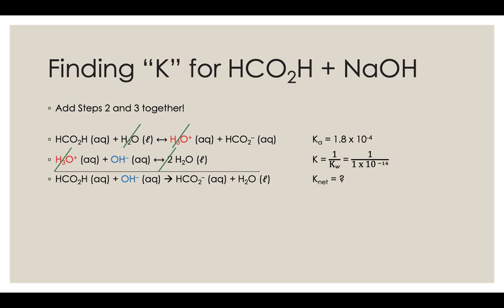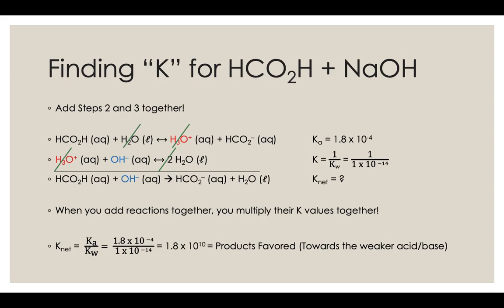That first one is a Ka, where that formic acid is donating a proton to water. The second line of those reactions there is the inverse of the autoionization of water. When we do autoionization of water, it's one water molecule plus another water molecule turning into hydronium and hydroxide. The way this one is written has the water on the product side. So when we flip the reactants and products around, we do the inverse of the K. When we add reactions together, you multiply their K values together. So if we multiply that Ka times the inverse of Kw, we would get 1.8 times 10 to the positive 10th, a very products favored reaction.